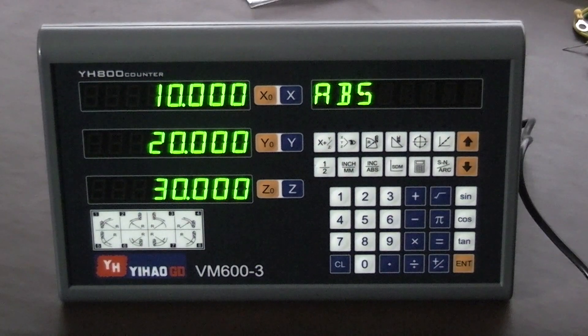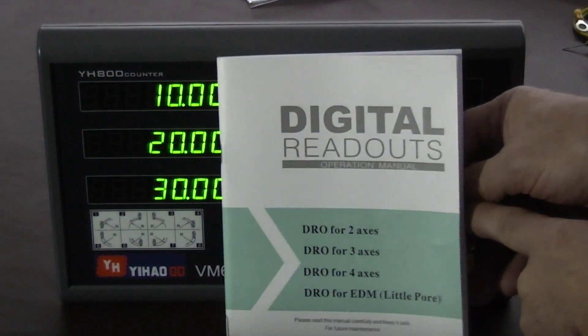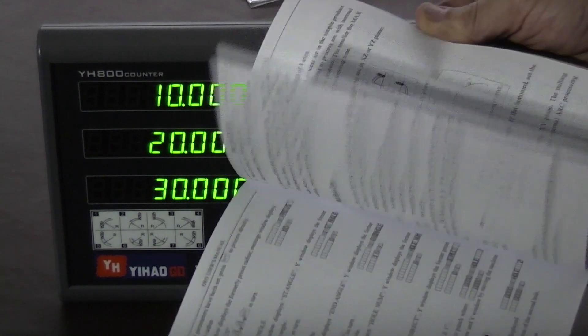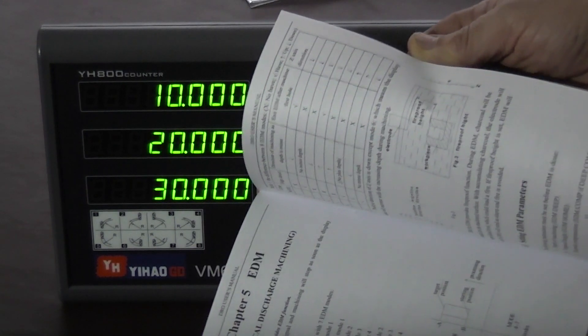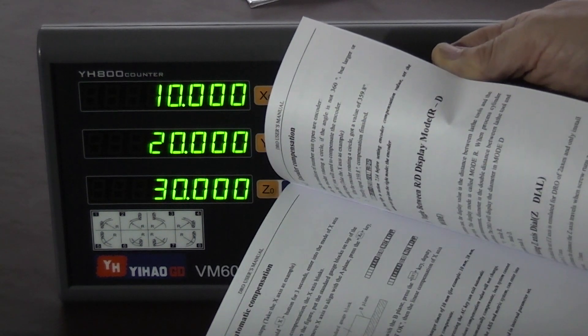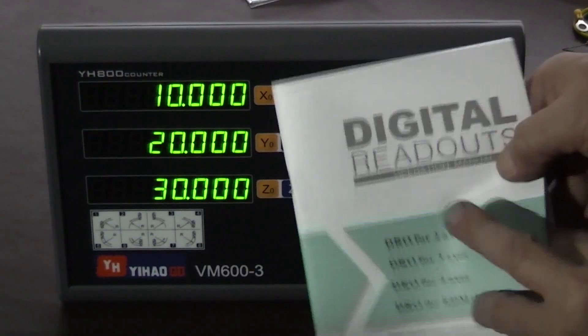It's a green display, it's clear. Instructions that come with it for the digital readout are very good, it's in English, it goes through step by step how to do the different things, and that's a 50-page booklet.